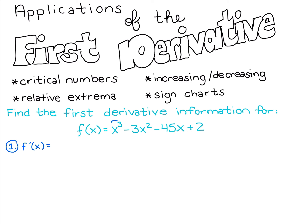The derivative of x³ is 3x². The derivative of -3x² is -6x. The derivative of -45x is -45. And the derivative of the constant 2 is 0. We're taking that derivative by bringing down the power and subtracting one for the new power, and then setting it equal to 0.